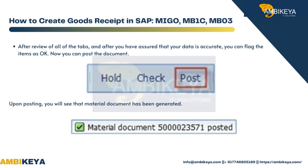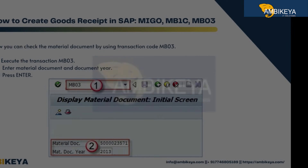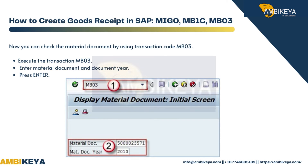Now you can post the document. Upon posting, you will see that a material document has been generated. You can check this material document by using transaction code MB03.